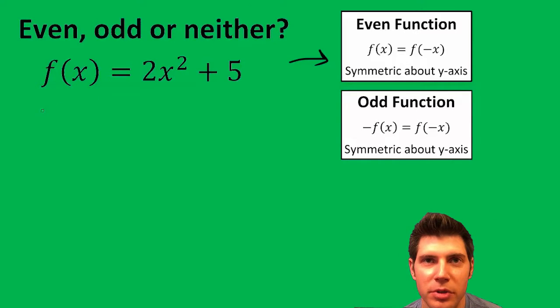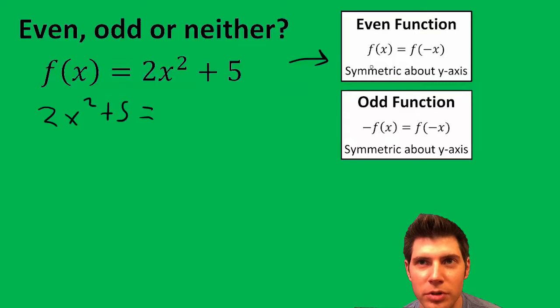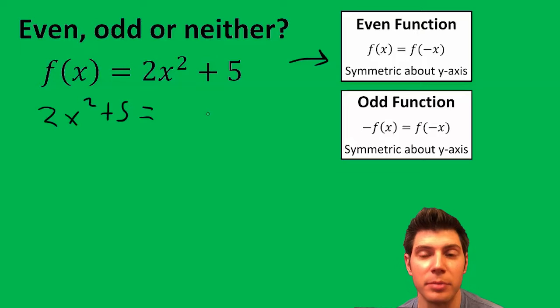So f of x, we're going to rewrite it because this is f of x, and we're going to say equals f of negative x. I'm going to plug in negative x everywhere I see an x.